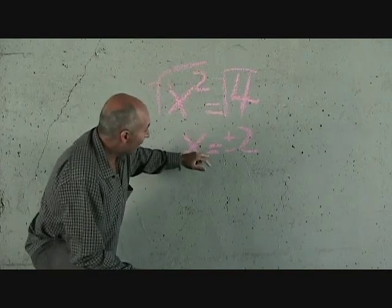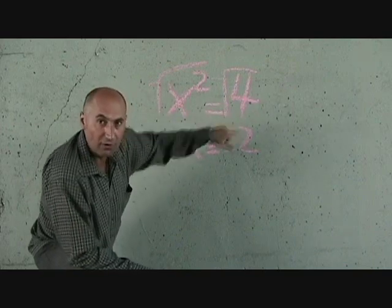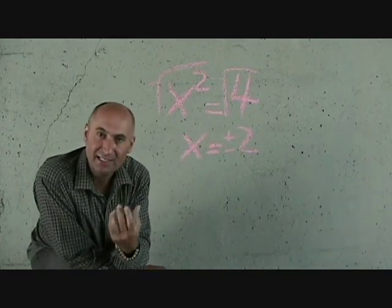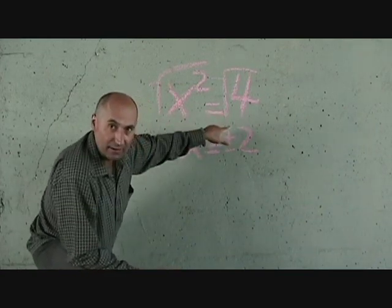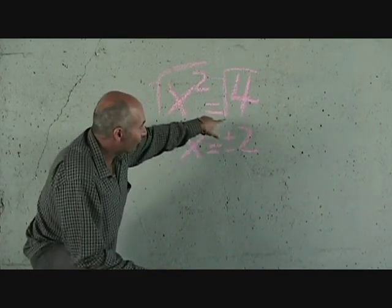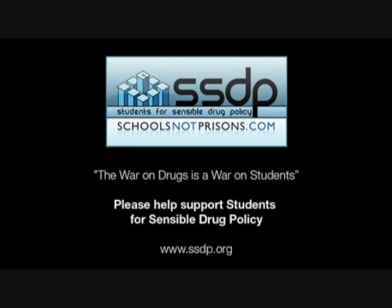And that's the same answer that we got when we did the factoring version of this. Now, this, when we set this question up, when we had x squared is equal to 4, graphically, this has a certain meaning. Now, let's graph this just to explain what it is exactly that we're doing here. So let's graph this one.